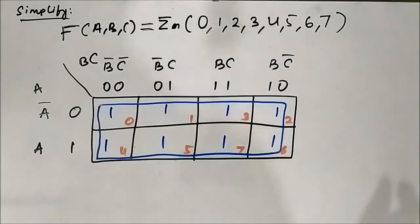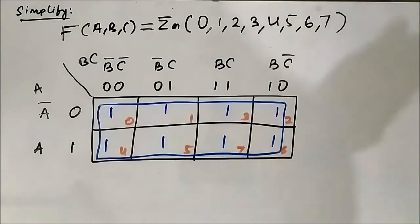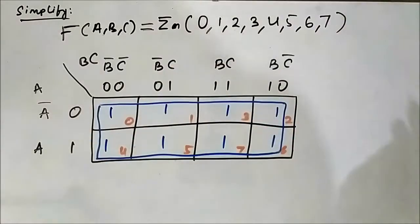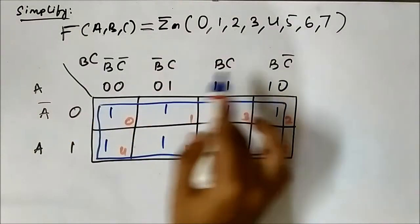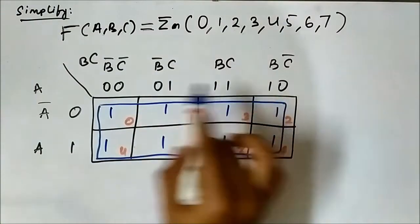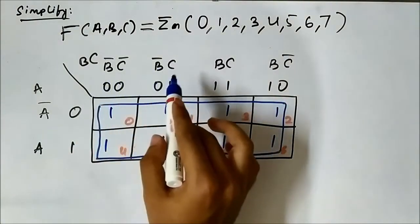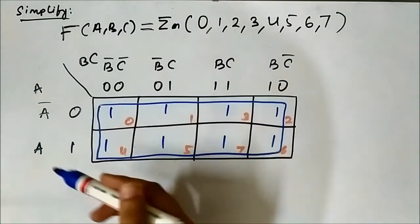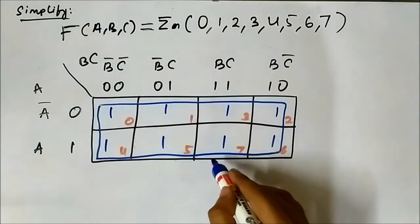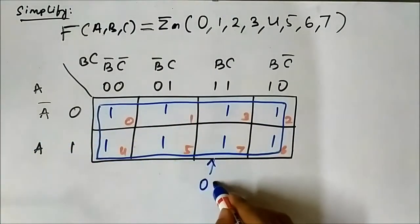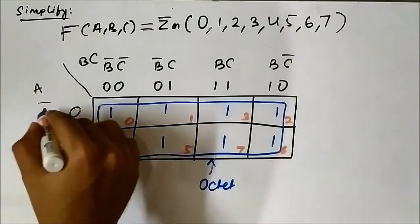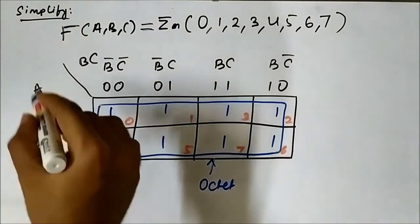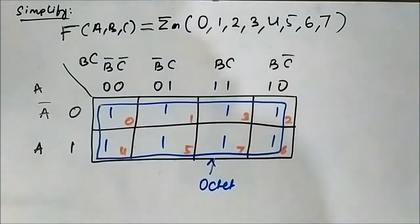Now, if you want to find the common variable here, nothing is common. In the vertical side: B complement, C complement, B complement C, BC, B C complement — nothing is common. In the horizontal side also, there is nothing common in this group. A complement, A — nothing common.